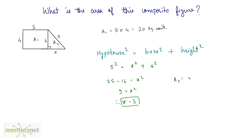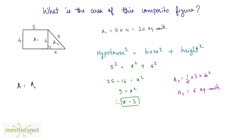The area of this triangle is half into base into height — that is half into 3 into 4, which equals 6 square units. Now we calculate the area of the composite figure: A equals A1 plus A2, which is 20 plus 6, giving us 26 square units.